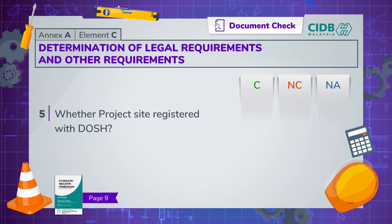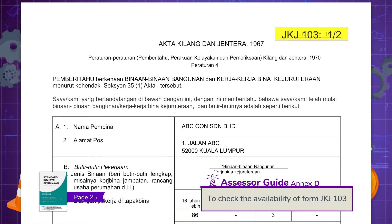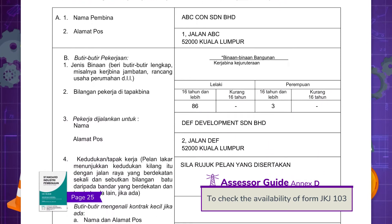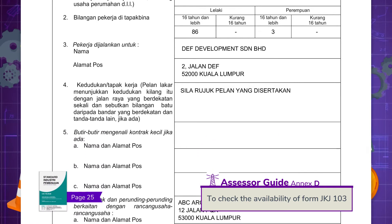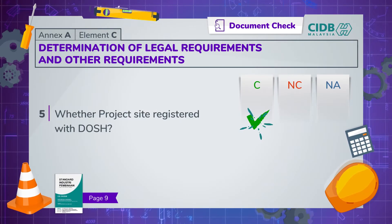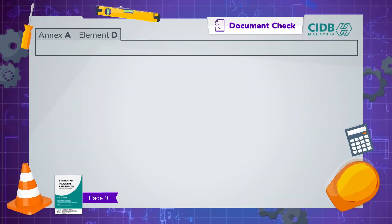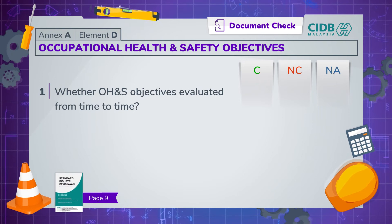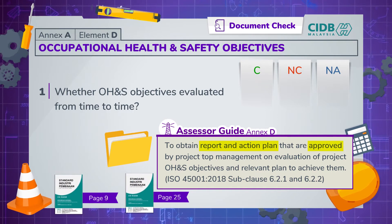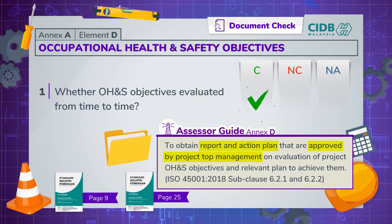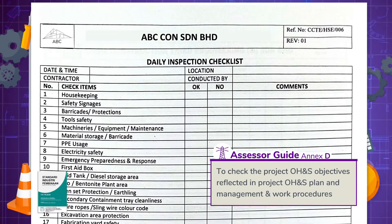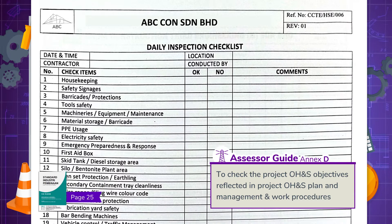Next, check if the project site is registered with DOSH by Siting Form JKJ-103. Element D is where we do a quick check on whether the OSH objectives are being evaluated from time to time. The compliance may be evidenced by reports and action plans on OSH approved by project top management. If these objectives are integrated into other work activities or procurement process, they should be reflected in the project OSH plan as well as management and work procedures.